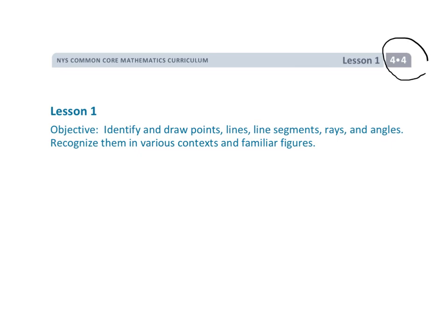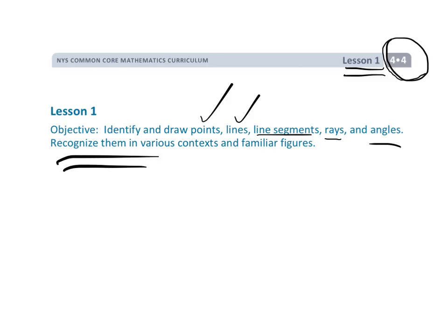This is Grade 4 Module 4 Lesson 1. In this lesson we're going to be identifying some key geometric things like points and lines and line segments, rays and angles. We're also going to notice that these things exist out in the real world in familiar shapes that we see every day. So let's get started.